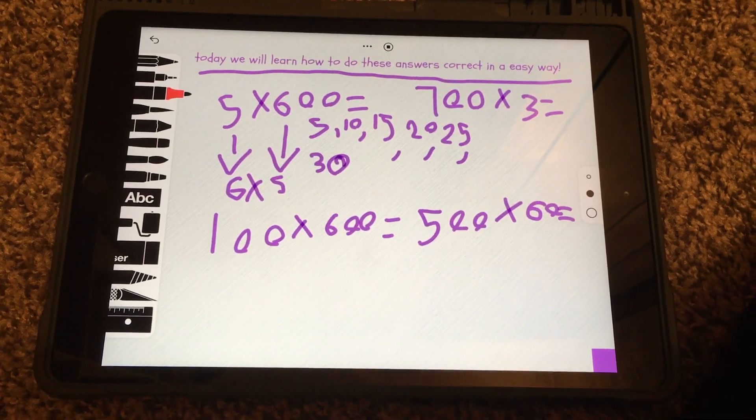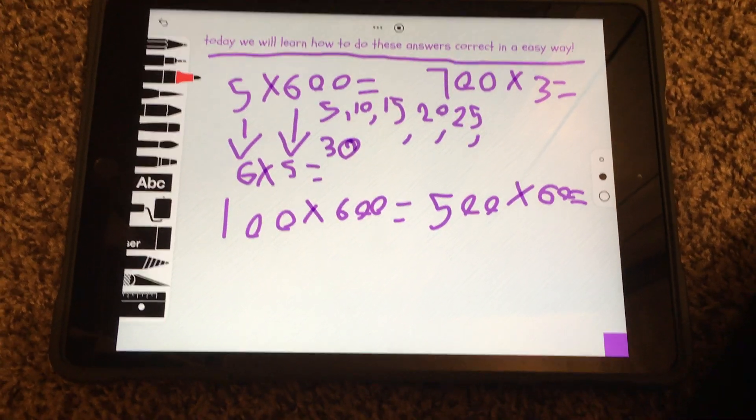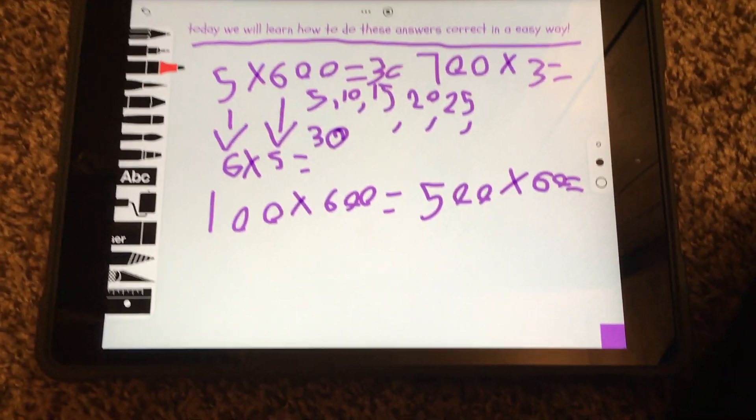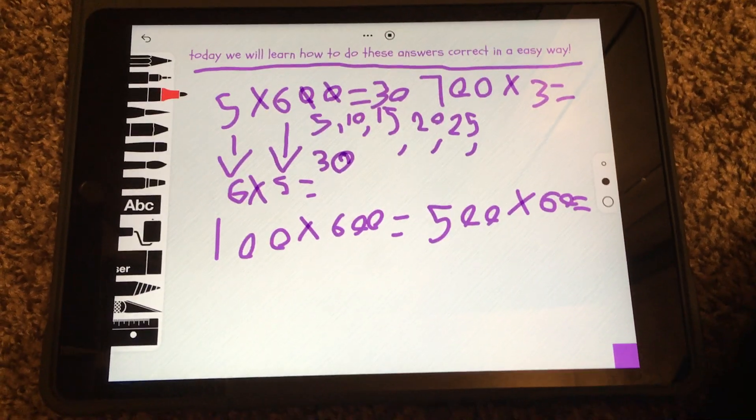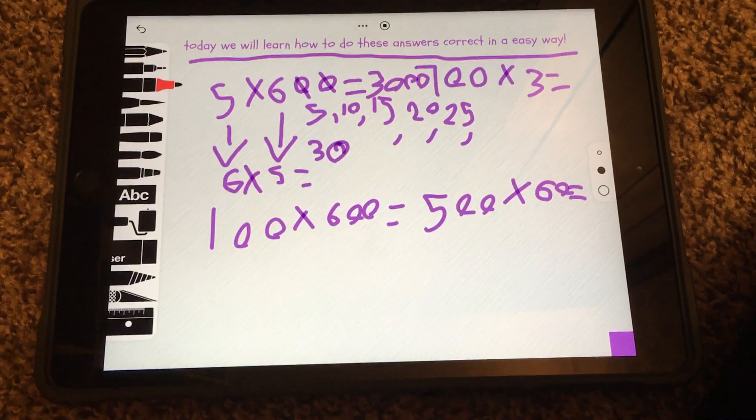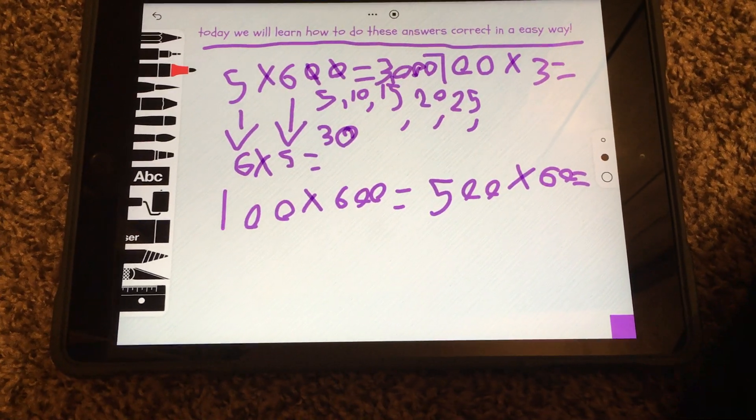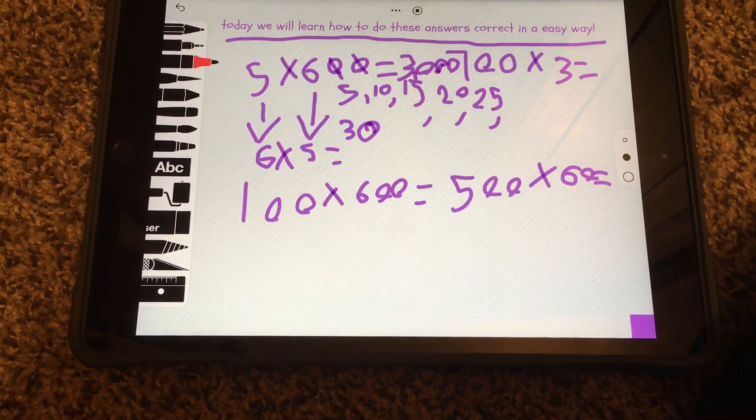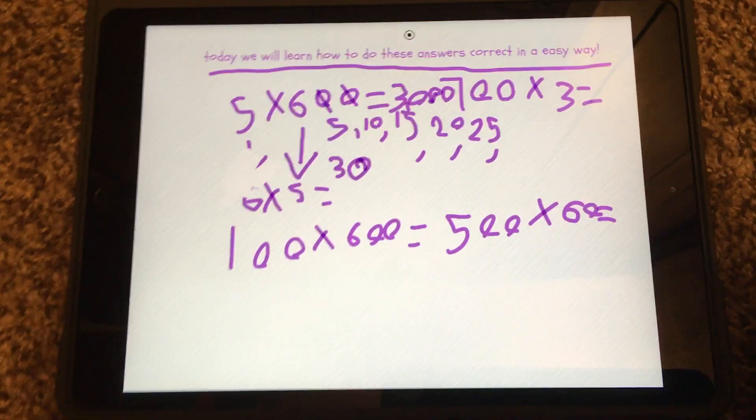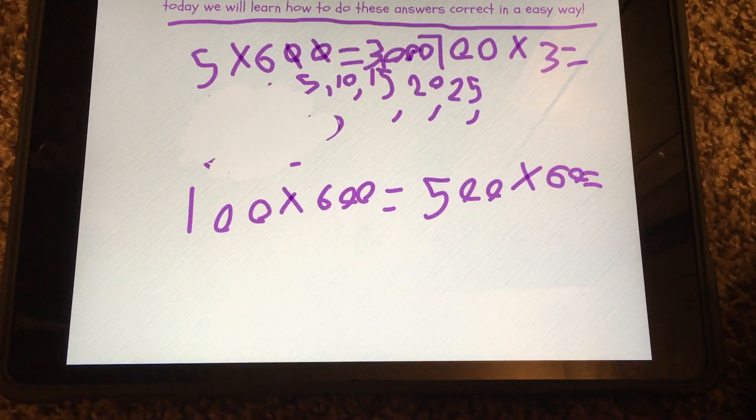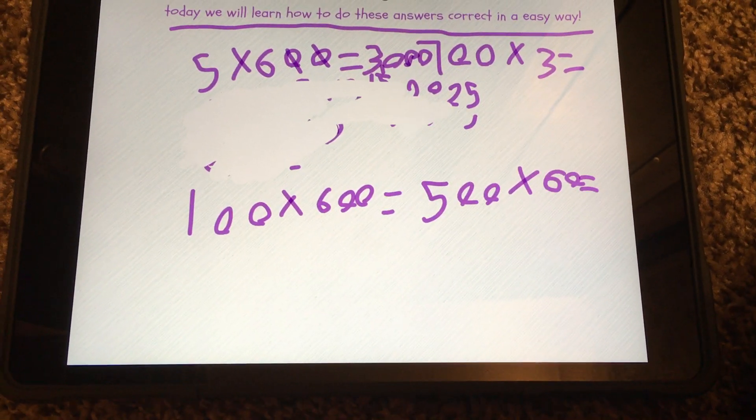So 30 is the answer, but we can't leave those zeros behind, so we're going to cross them out and then put them down. So that equals 30,000. Make sure to do commas correct. You just have to add how many zeros there are to that number.